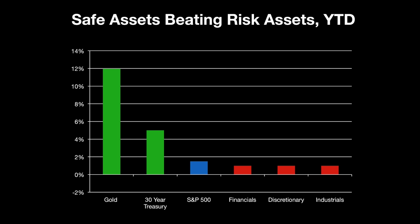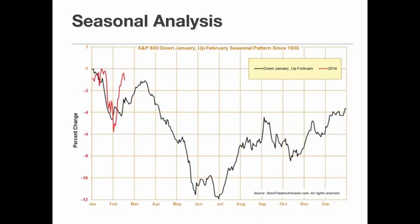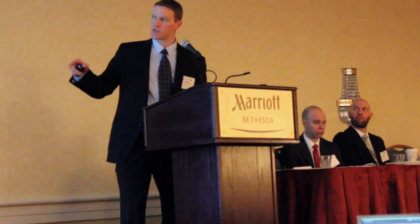The last slide I'm going to go over is a seasonal pattern. Seasonal patterns are again taking a look at historical patterns and comparing them to our current situation to see if they give us a roadmap for the future. In this case we're looking at a chart from the Stock Trader's Almanac, which looks at a period when January is down and February is up. The average is the black line going back to 1930, based on 15 prior instances. As you can see, after about mid-March, if this seasonal pattern holds, we have a significant correction coming in the S&P 500 going into the second and third quarter of this year — on average about a 10 to 11 percent decline. As a roadmap for the future, this may be saying it's time to be a little bit more cautious.